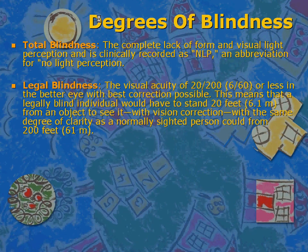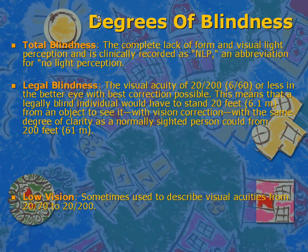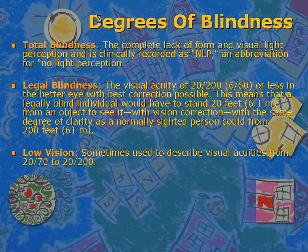Another degree of blindness is legal blindness — a vision acuity of 20/200 or less in the better eye with best correction possible. This means that a legally blind individual would have to stand 20 feet from an object to see it with the same degree of clarity as a normal sighted person could from 200 feet.